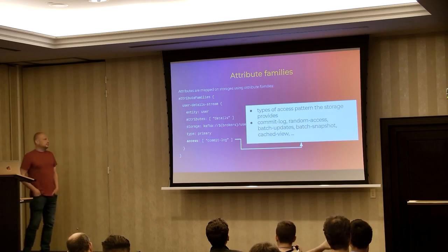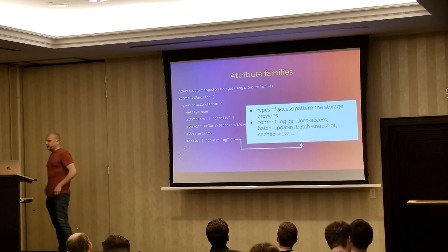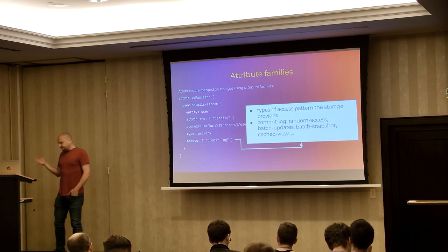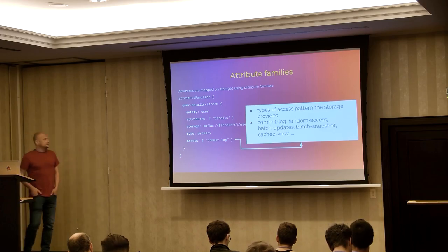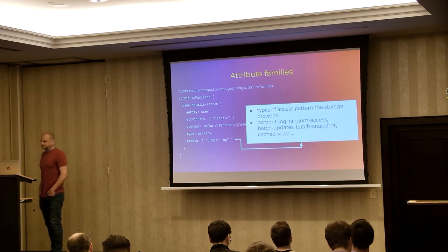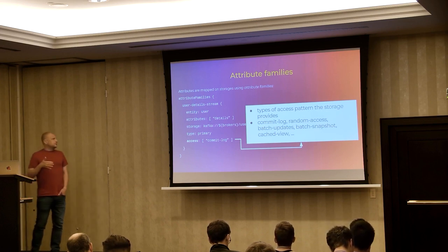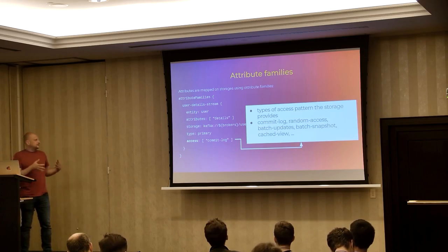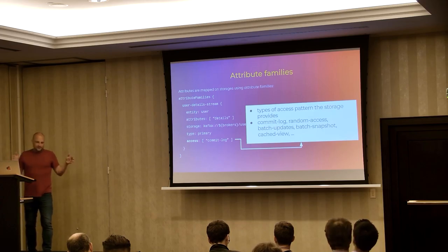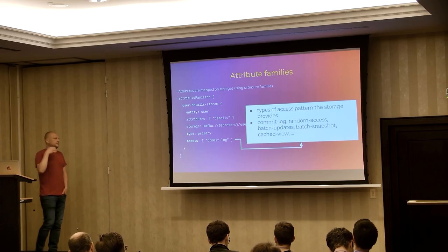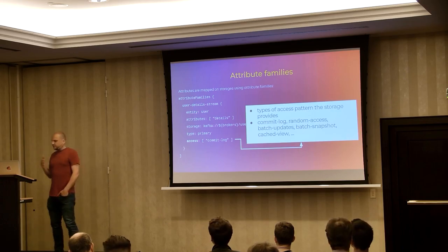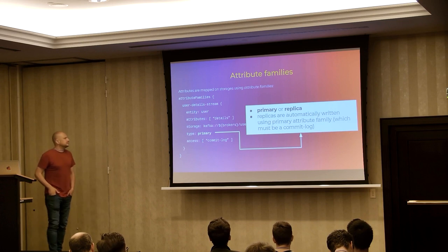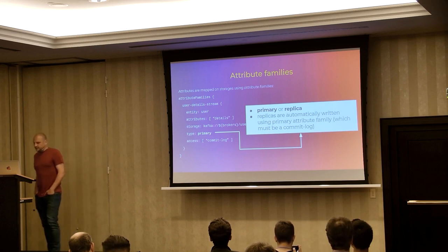The platform supports several types of access patterns. The most basic, since the platform is streaming-first, is the commit log — of which Kafka is a canonical implementation — but you can have multiple different implementations like Apache Pulsar, Kinesis, Google Pub/Sub, and other managed services. There is also a random access pattern, which is the classical case of NoSQL databases, and an access pattern for archived streaming data typically stored in batch storage like S3 or HDFS.